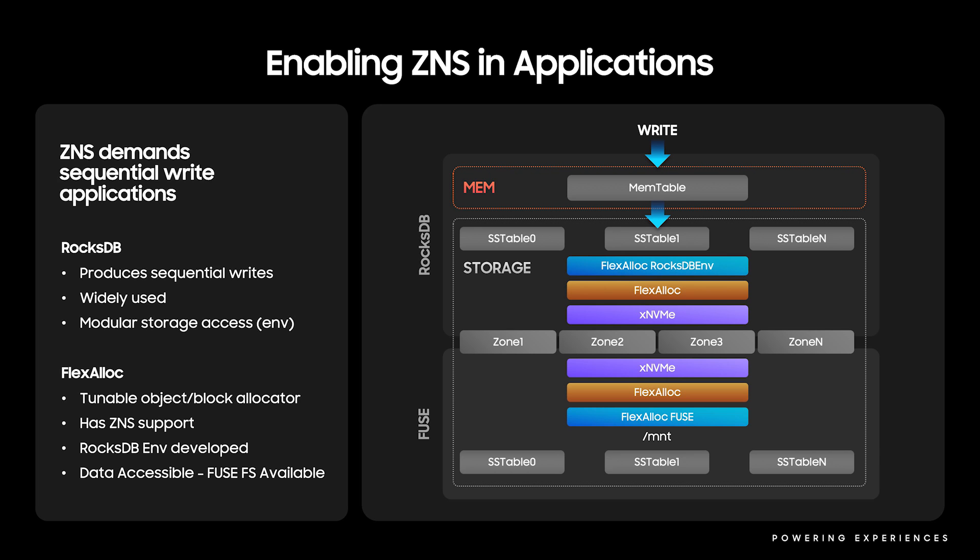FlexAlloc is a tunable block allocator we have developed that has ZNS support. Originally designed to provide a lightweight storage abstraction above a raw block device, FlexAlloc lends itself to device-specific optimizations such as ZNS compatibility. FlexAlloc leverages the XNVMe library to provide flexible access to multiple storage pathways without requiring source code changes. A key design decision of FlexAlloc is that it does not hide all ZNS constraints from the target application, but instead exposes ZNS parameters to consumers of the FlexAlloc API, supporting ZNS-dependent software optimizations in layers above FlexAlloc.